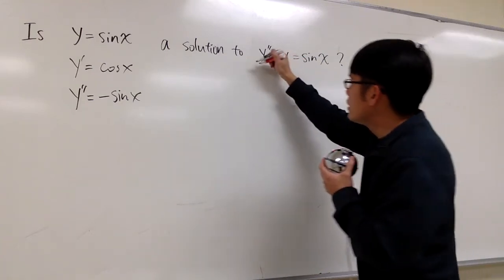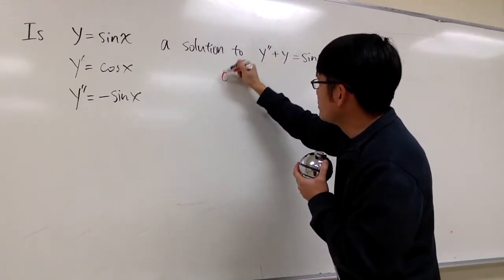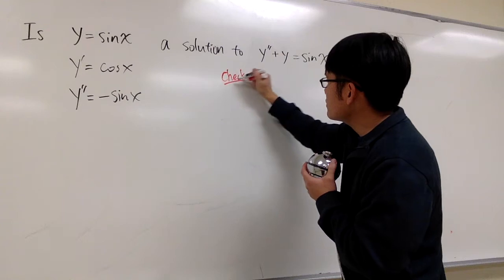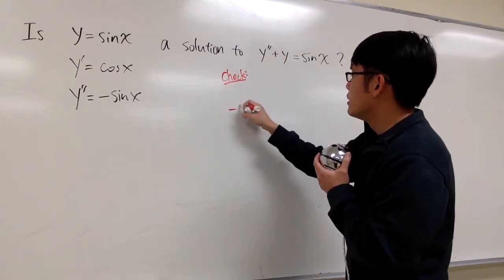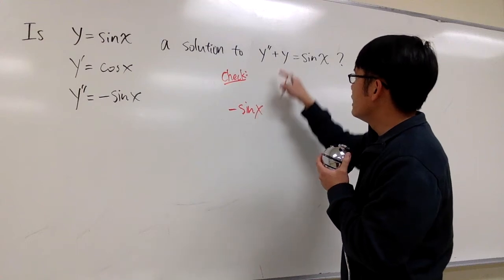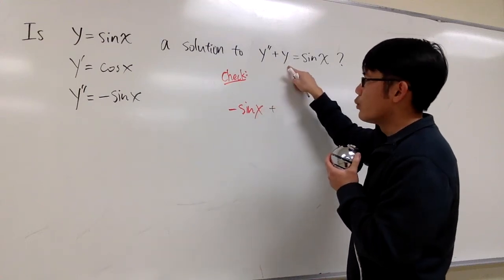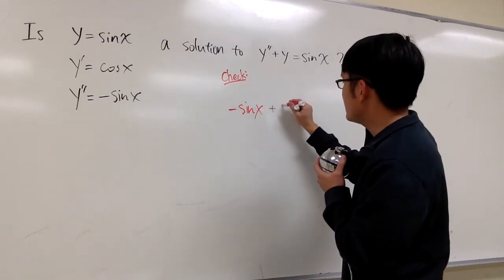Like the second derivative right here. Let's see. I'm just going to check. I'm just going to write down check. So for the second derivative, I find it to be negative sin x. And I have to add the original, which is y, which is positive sin x.